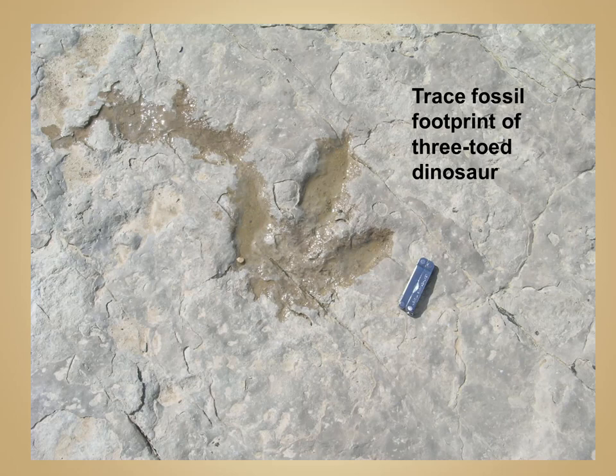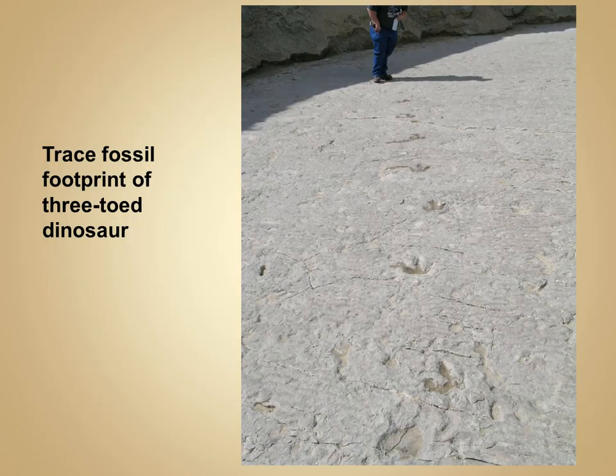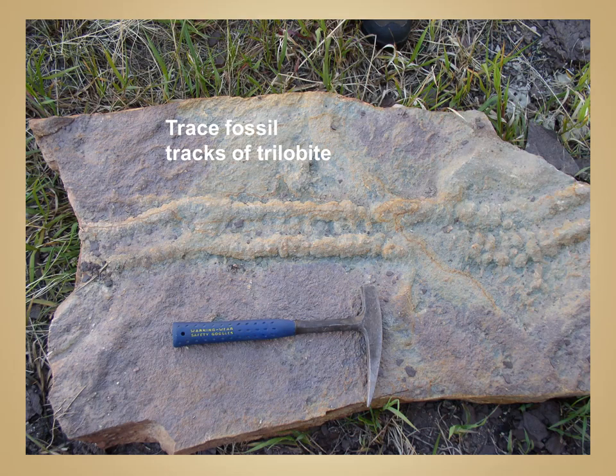If this sediment is preserved, these traces or footprints can also be recorded in the rock record. Here we see the trace footprint of a three-toed dinosaur, and zooming out you can actually see a pathway where this three-toed dinosaur walked across a sandbar. Here you can also see the trace of a trilobite — this is a negative image of the actual trace, where sediment filled in on top of the small grooves carved by the trilobite walking across the surface, and was later lithified.